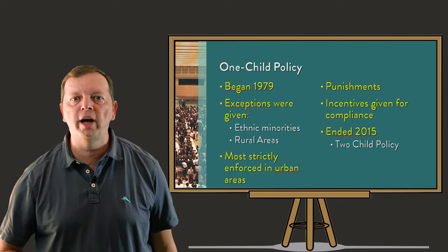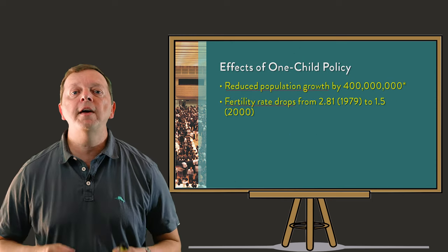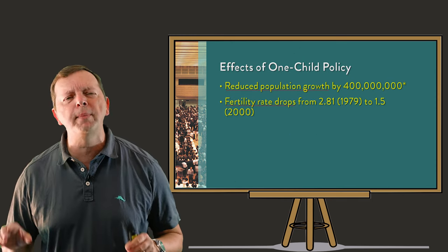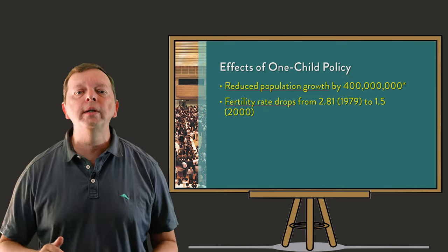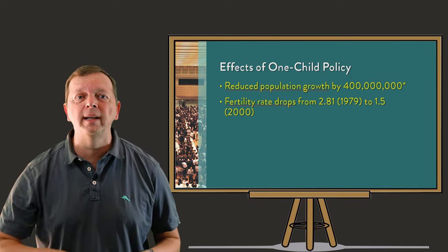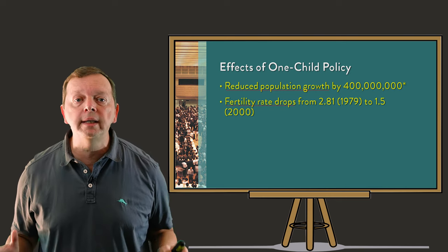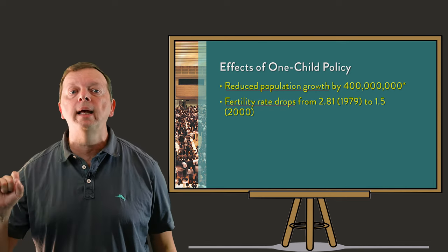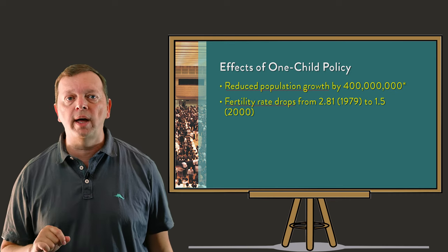China now has a two-child policy. Some estimates report that 400 million fewer people were born during this time, although many analysts disagree, arguing that the birth rate was already declining. We know that the birth rate and fertility did dramatically drop from 2.8 in 1970 to just 1.5 in 2000.